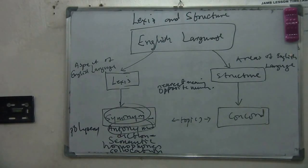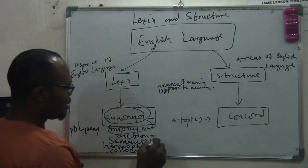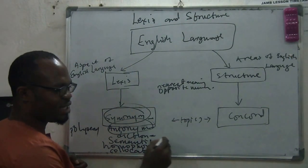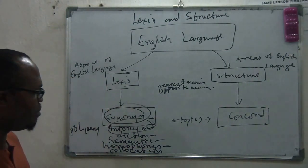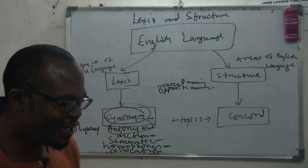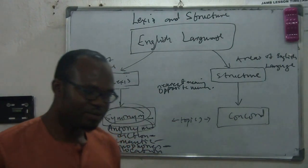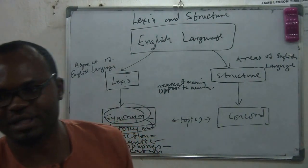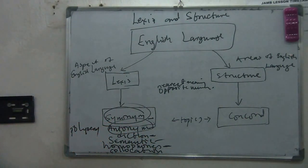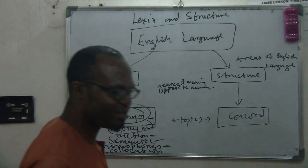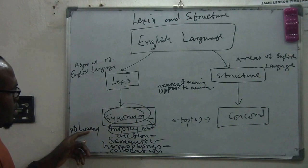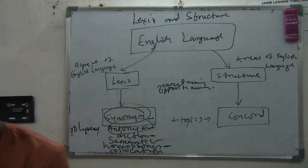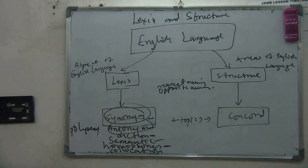Semantics is about the meaning of words. Homophones are words that sound the same but have different meanings — for example, 'advice' and 'advise.' And polysemy refers to a word that has two or more different meanings.